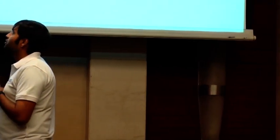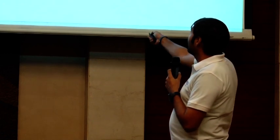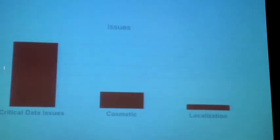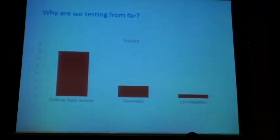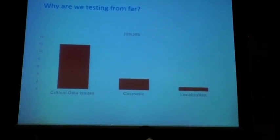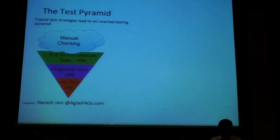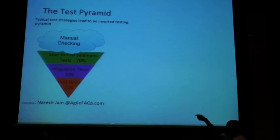Another way to look at this data: what were the tests actually finding? A big chunk were essentially critical data issues — very few cosmetic issues. We support the product running in different regions, so there are some localization and internationalization issues. But the vast majority were from critical data issues and business logic issues. If you look at the state of our testing, this is what we call the inverted test pyramid. Are people familiar with this term? The inverted test pyramid — or the ice cream cone problem?